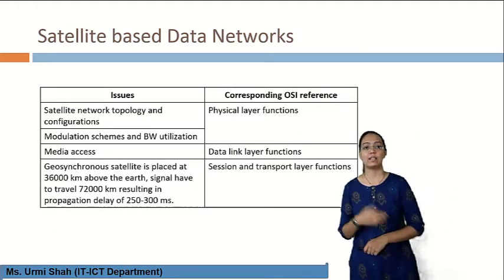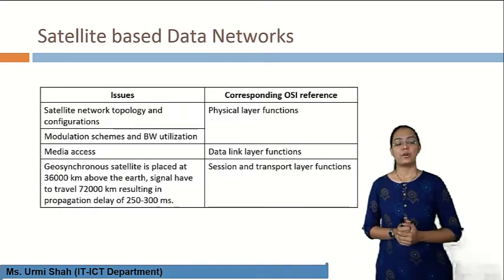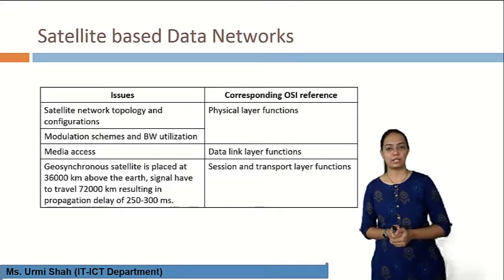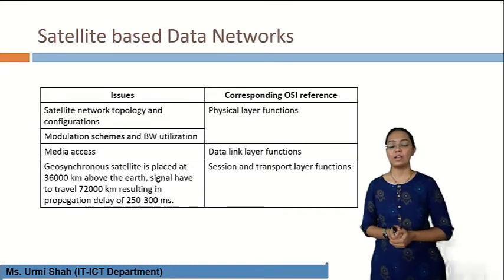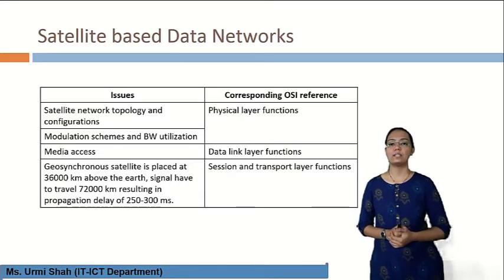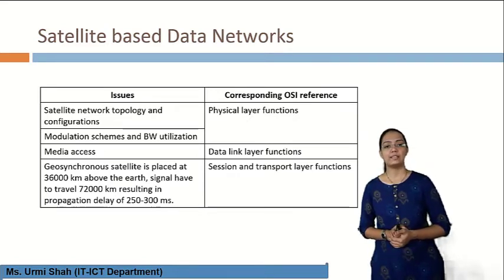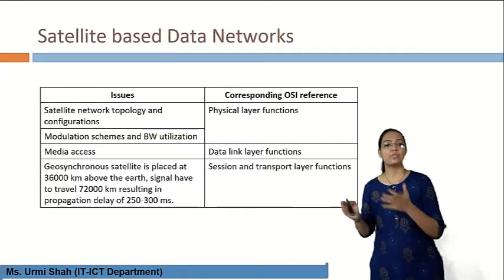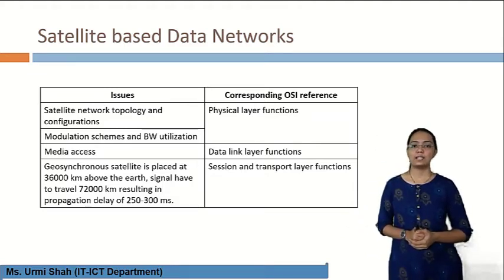Next, differentiating the issues and corresponding OSI references for satellite-based data networks: the issues are satellite network topology and configurations, modulation schemes and bandwidth utilization, and media access. A geosynchronous satellite is placed at 36,000 km above the earth, so signals have to travel 72,000 km, resulting in a propagation delay of 250 to 300 ms. The corresponding OSI references include physical layer functions, data link layer functions, and session and transport layer functions.